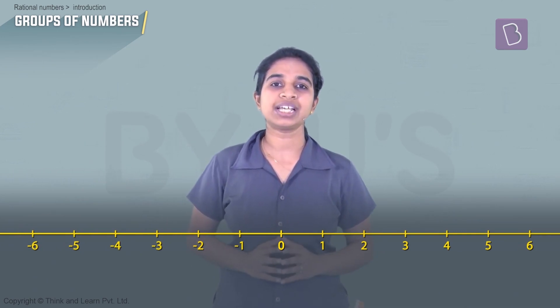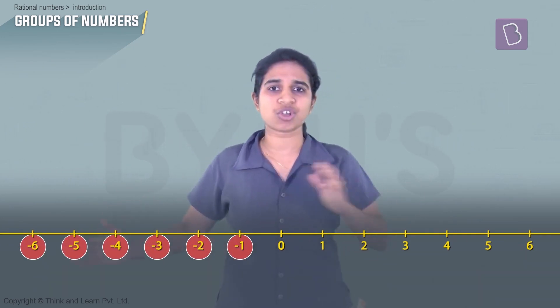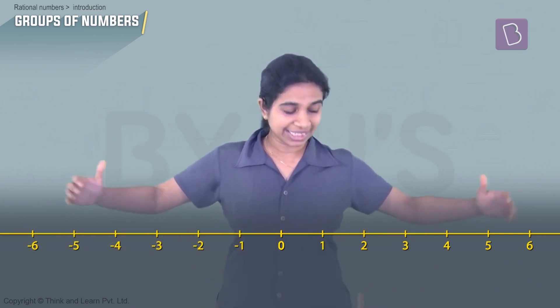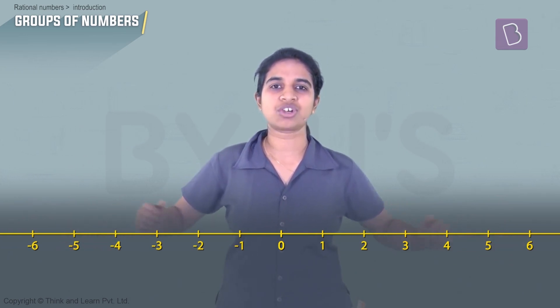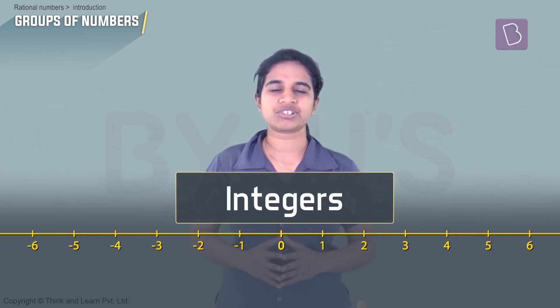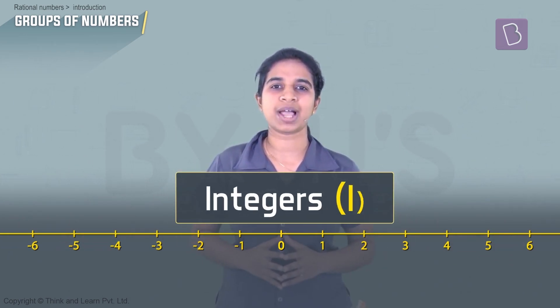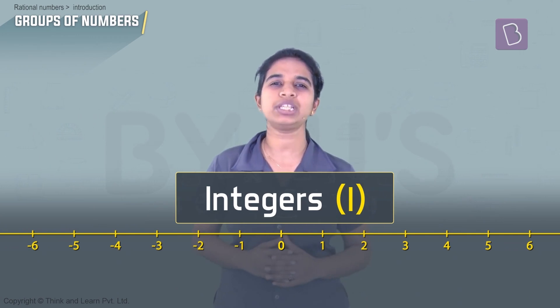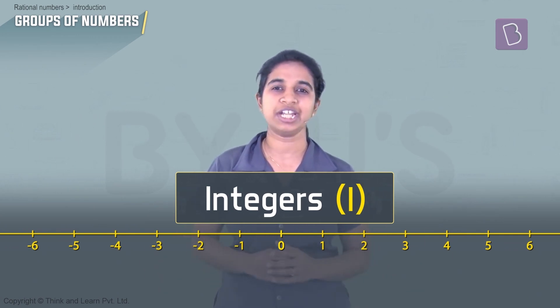To represent minus five, we add another set of numbers to the left of zero — these are the negatives of the natural numbers. We add negatives of the natural numbers to the other side. This entire set of numbers is called integers, represented by I — again an infinite set.